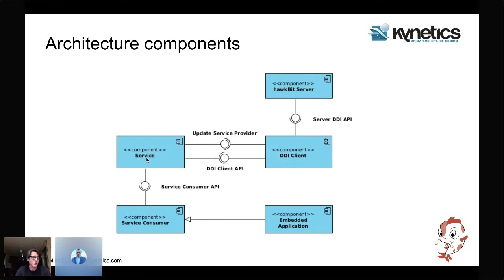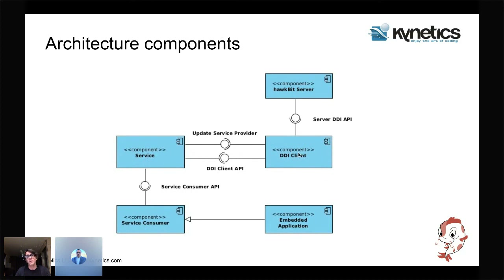The DDI client communicates with a service — in this case an Android service, though it could be a daemon on Linux. The service uses the DDI client API. Importantly, the DDI client exposes interfaces that are populated by the service because they are platform-specific. The service handles the platform-specific parts, while the DDI client is platform-independent. There is also a service consumer — a set of APIs you can embed in your application to communicate with the service.